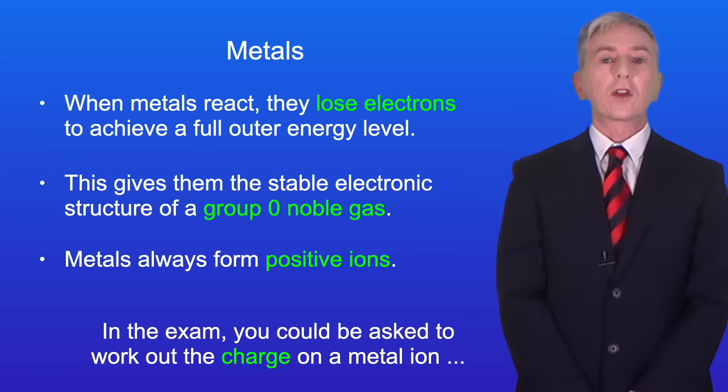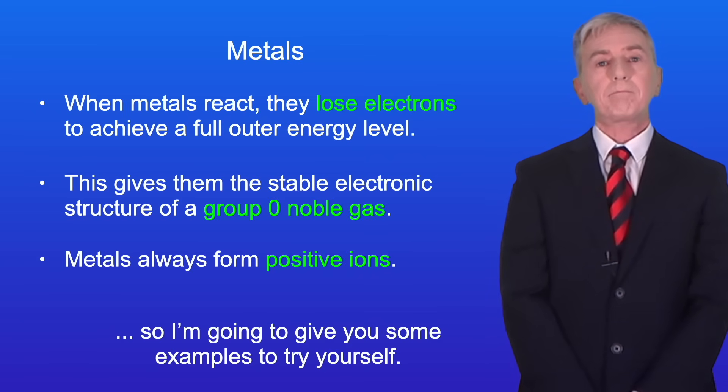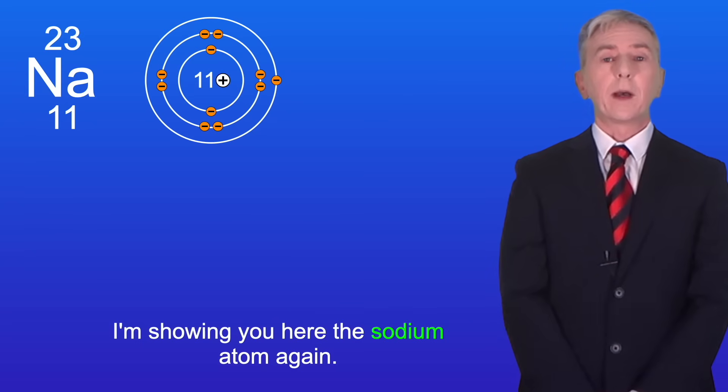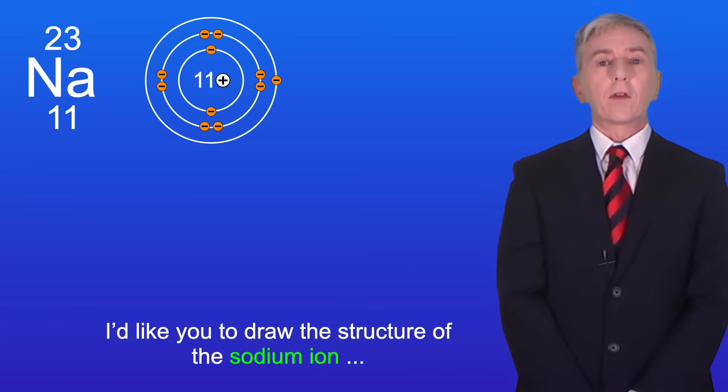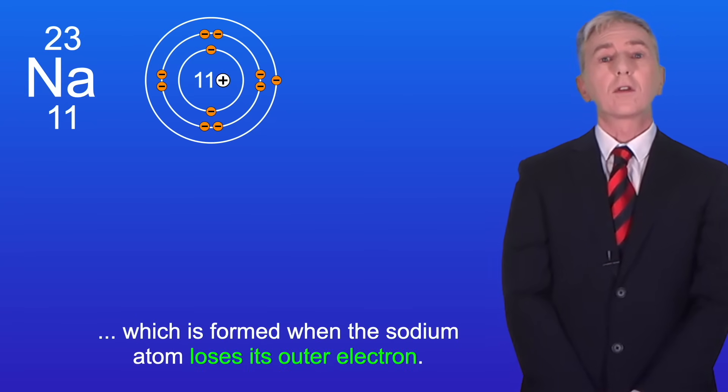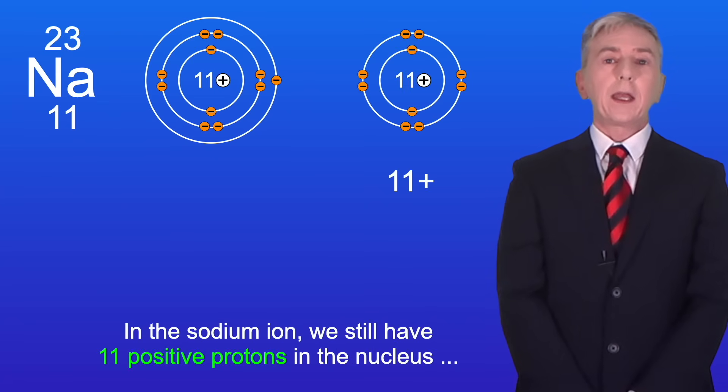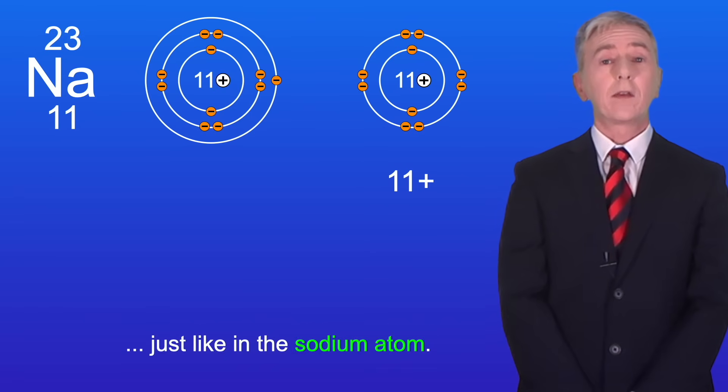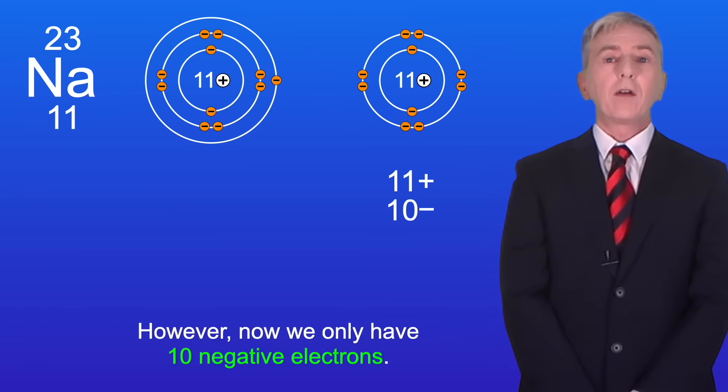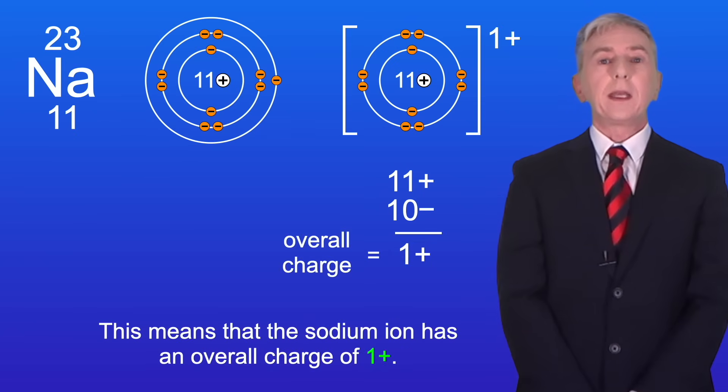In the exam you could be asked to work out the charge on a metal ion, so I'm going to give you some examples to try yourself. I'm showing you here the sodium atom again. I'd like you to draw the structure of the sodium ion which is formed when the sodium atom loses its outer electron. So pause the video and try this yourself. Okay, in the sodium ion we still have 11 positive protons in the nucleus, just like in the sodium atom. However, now we only have 10 negative electrons. This means that the sodium ion has an overall charge of 1 positive.